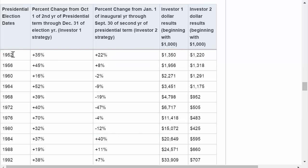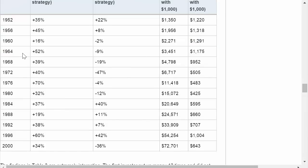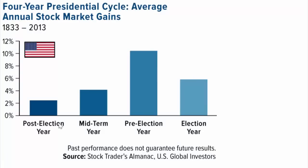What this analysis shows is that over time, the first person — who invests in year two and sells in the election year — gains quite a lot of money, while the second person who does the opposite unfortunately loses a lot. Investor one's investment grows dramatically over time, while investor two actually loses money by the year 2000 over a 50-year period. If you invested $1,000 using the first strategy in 1952, by the year 2000 you would have gained $72,000. But the second person would have only had $643 — actually losing about $300. This suggests that investing in January 2017 is a really bad idea; you should wait until possibly December 2018 before buying in large amounts, then sell sometime in December 2020.